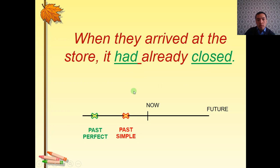Let's look at the time line. Here is the now and here is the future. Past perfect is here, had closed. And past simple is here, they arrived.